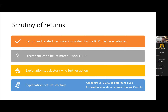ASMT-10 is the notice issued under the Scrutiny of Returns segment. It is based on the returns and relevant particulars furnished by the taxpayer. It is more of an intimation that discrepancies have been identified in returns filed by you — please give your explanation. If the explanation is found satisfactory, the proceedings will be dropped. If not, the proper officer can select your case for audit, special audit, or initiate proceedings under Section 73 or 74, which primarily means issuance of a show cause notice for recovery of tax.